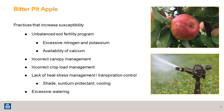There are some practices that can increase the susceptibility of bitter pit in apples. First and foremost, an unbalanced soil fertility program, where you may have excessive nitrogen and potassium in the soil or low calcium availability, can make the problem worse. Additionally, incorrect canopy management, incorrect crop load management, lack of heat stress management or transpiration control, and excessive watering all contribute.